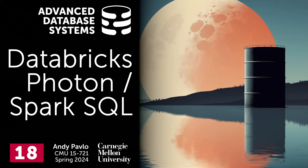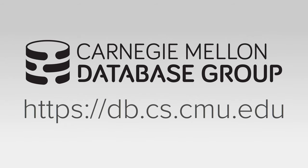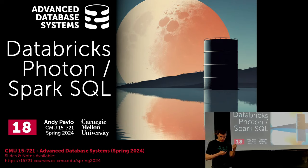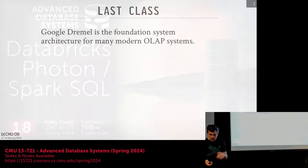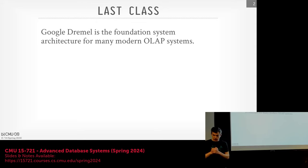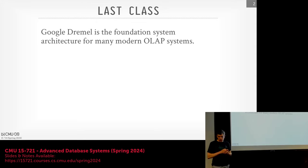Carnegie Mellon University's Advanced Database Systems course is filmed in front of a live studio audience. Last class we discussed BigQuery and Dremel. That system architecture served as a foundation or blueprint for how people build modern OLAP systems. When we see Snowflake next week and Spark today, it's going to look very similar in bits and pieces.